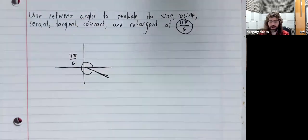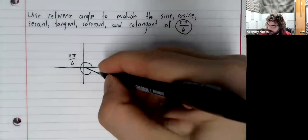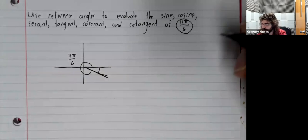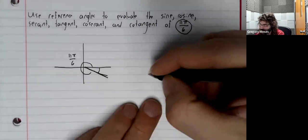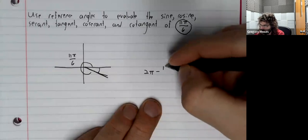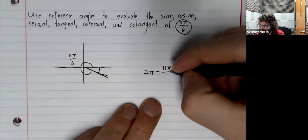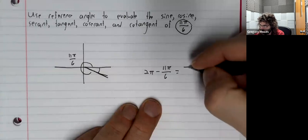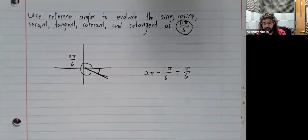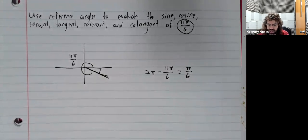We find the reference angle using subtraction. That ends up being pi over 6.